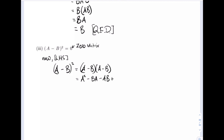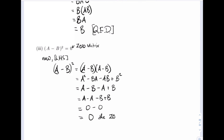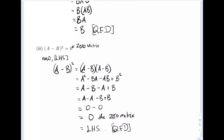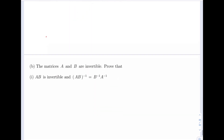Here I can recall that A squared is equal to A, so I'll write A; minus BA, which is B; minus AB, which is A; and B squared is also B. So we are now left with A minus A minus B plus B, which means we have zero minus zero, which is equal to zero — the zero matrix. Therefore our proof is complete.